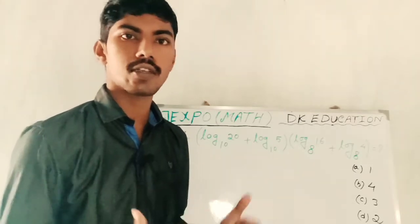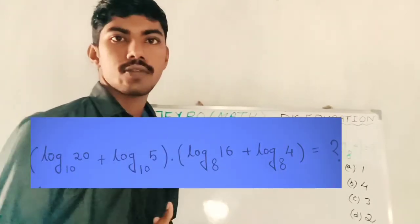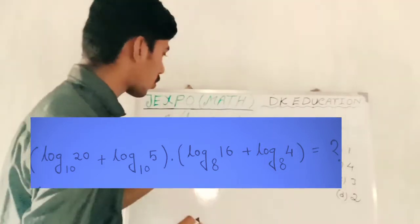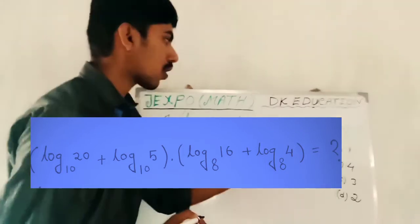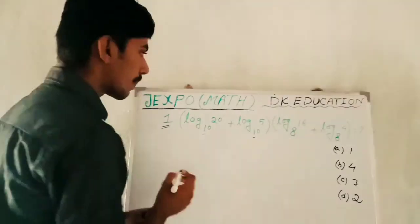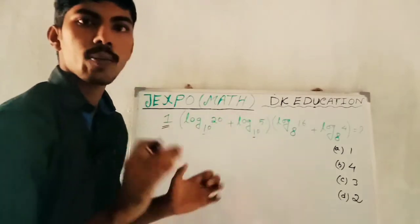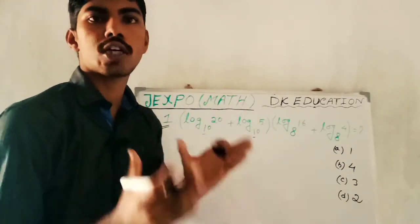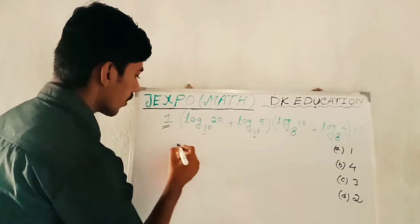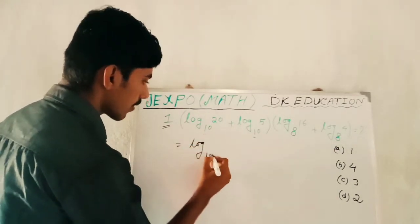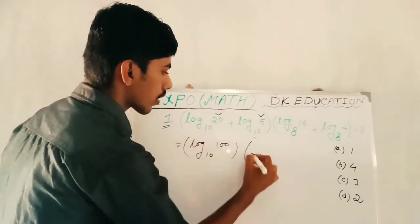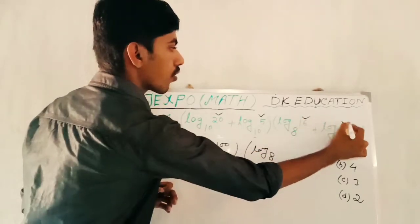Ok, let's start the video. The first part is to work on logs. What does the base mean? The base is 10 in one state — gold. The second one: the base is 8 in one state, which is also 8. Then the base is 8 in one state. If the base has 0, what does the power become? So what do I have to write? Log base 10 of 20 and 5.